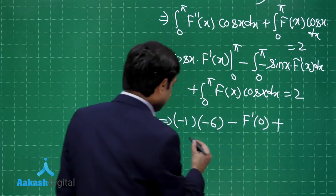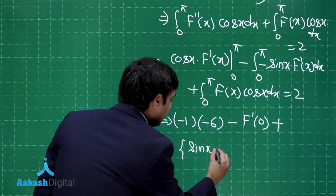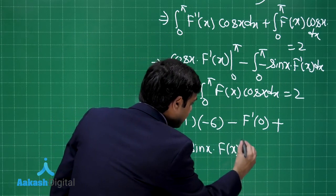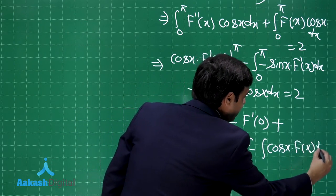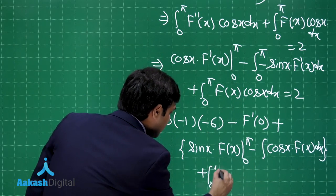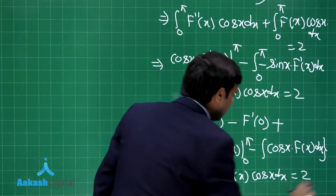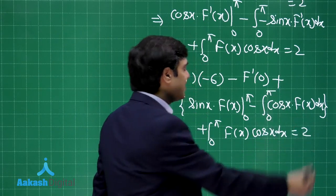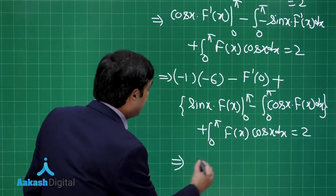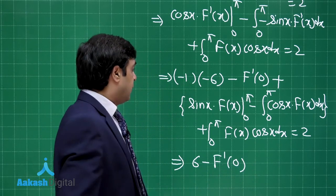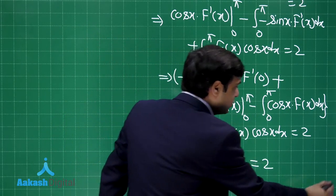Continuing: the next integral ∫₀^π sin x · f'(x) dx is integrated by parts again, giving [sin x · f(x)]₀^π minus ∫₀^π cos x · f(x) dx. The remaining ∫₀^π F(x)·cos x dx cancels with this term. Applying limits, sin(π) = sin(0) = 0, so those terms vanish. We are left with 6 − f'(0) = 2.